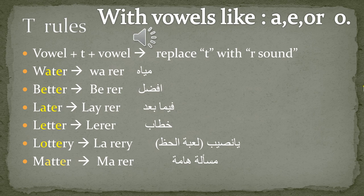T between two vowels, especially A, E, U, or O. So here the T is between A and E, so you say 'water' — you remove the T and put an R sound, just to make it sound like an American person.